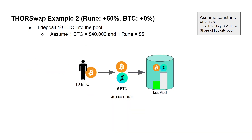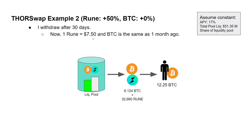Now let's look at another example where the RUNE token price increases 50% while Bitcoin doesn't change. All other assumptions are the same — constant APY, pool liquidity, and my share — and I deposit the same 10 Bitcoin at the same prices. After 30 days, RUNE has increased to $7.50 while Bitcoin stayed the same. The amount of Bitcoin in the pool increased and RUNE decreased. When I withdraw, I get 6.124 Bitcoin back (deposited 5) and about 33,000 RUNE — less than I deposited — which converts to 12.25 Bitcoin.